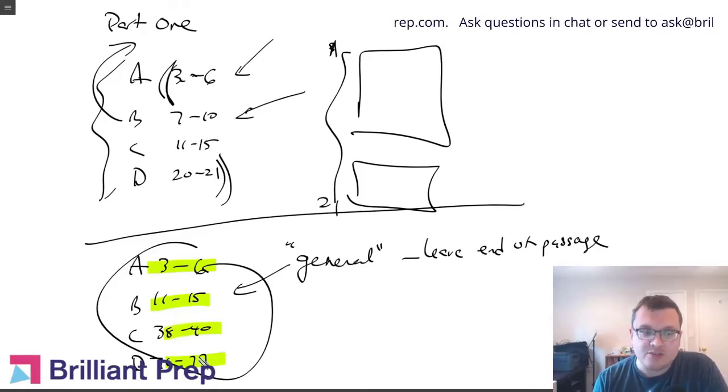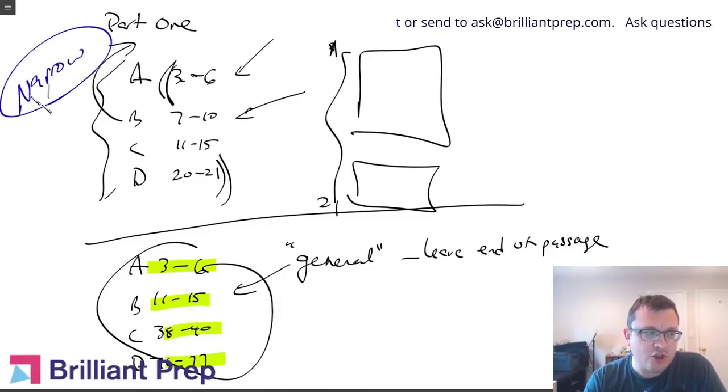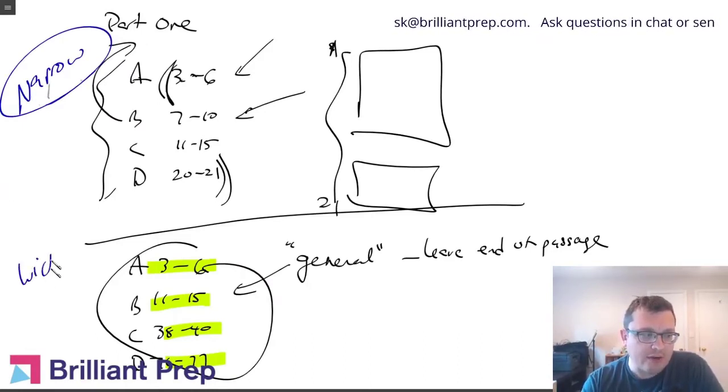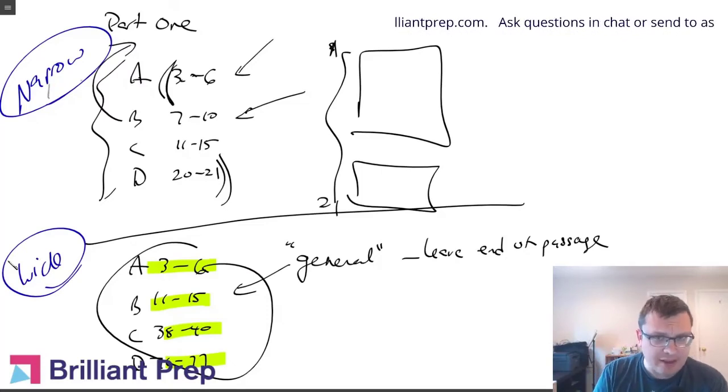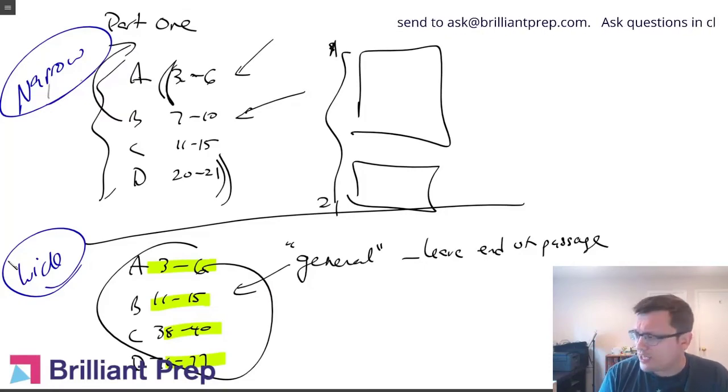So it's kind of two different species. You've got the narrow evidence questions. Those I think you can do in the moment, in the flow. And then you have the wide range. And those I think you need to skip and come back to later because those are hard to do with the strategy that we're talking about here. I mean, I think they're sort of hard to do no matter the strategy. But certainly with our strategy, it's not ideal. But for them, I just skip them. I do them later at the end.